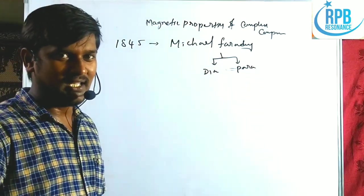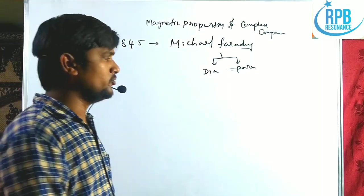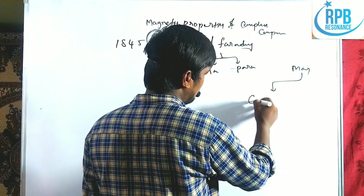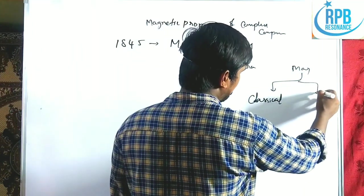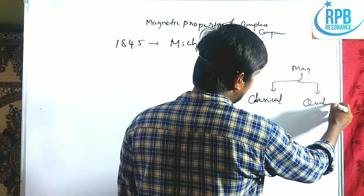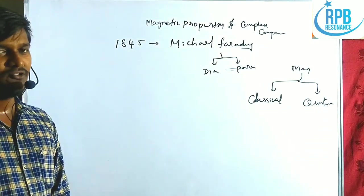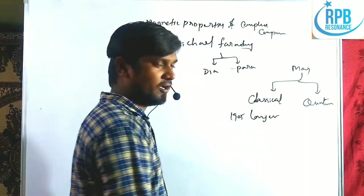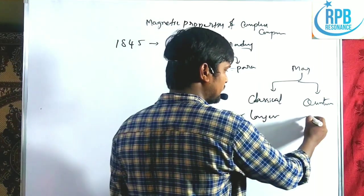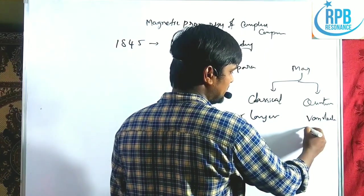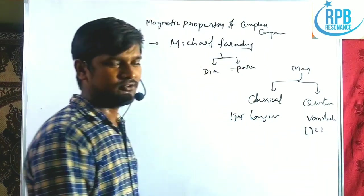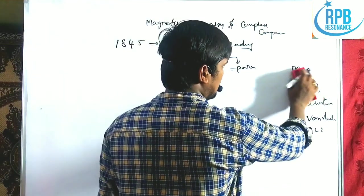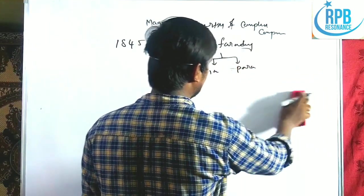The study of magnetic properties generally proceeds through two types of theory: classical theory and quantum theory. Langevin introduced the classical theory in 1905, and Van Vleck introduced the quantum theory in 1923. These two theories are very helpful to predict the magnetic momentum of crystals, coordination compounds.